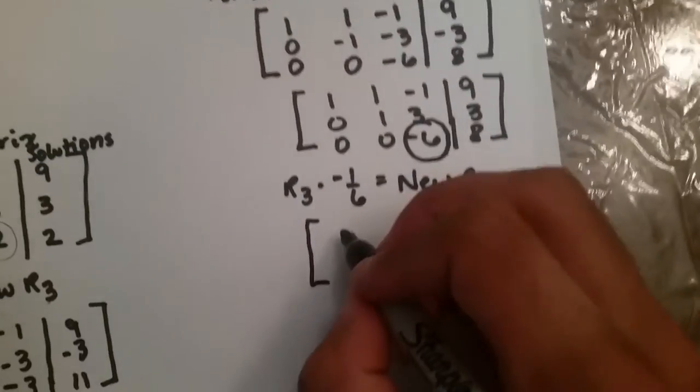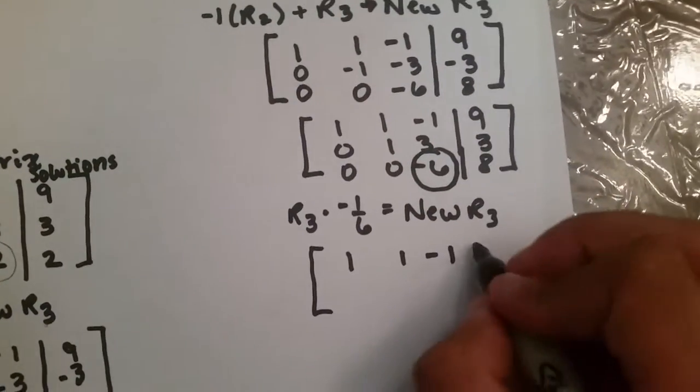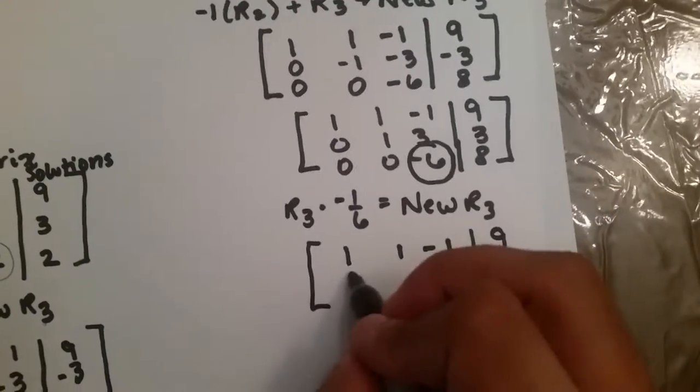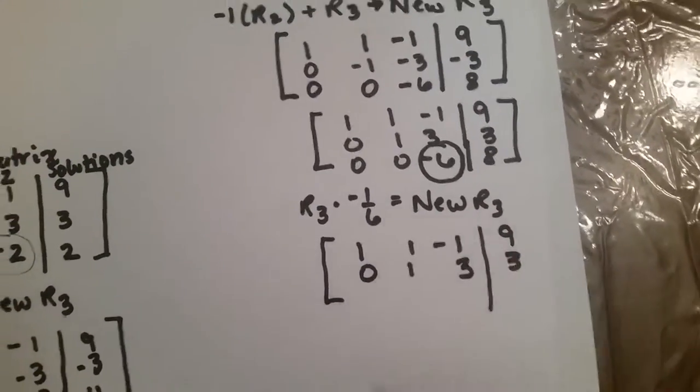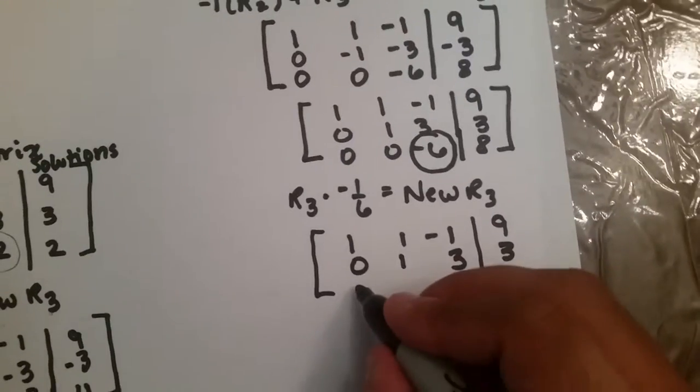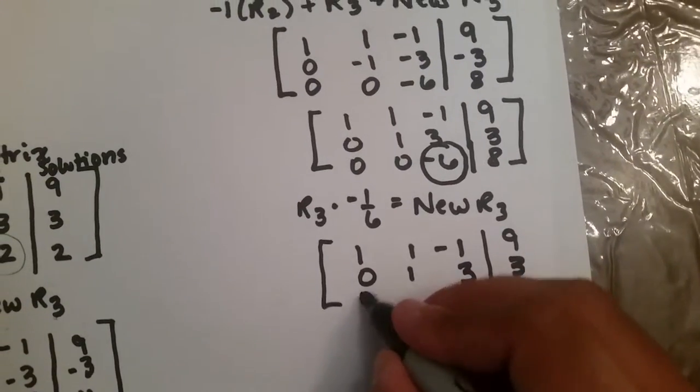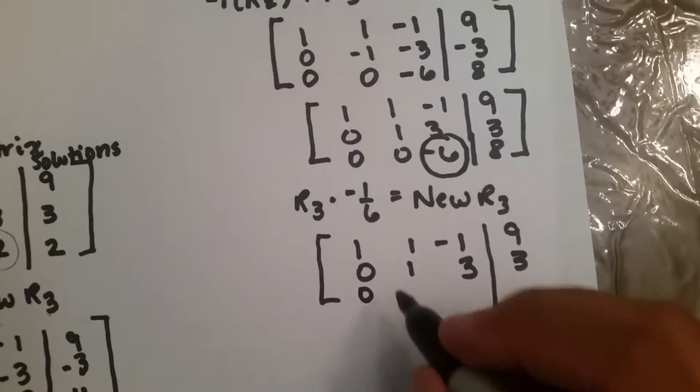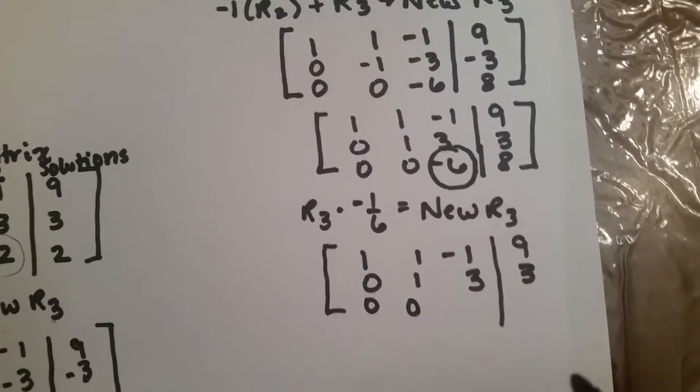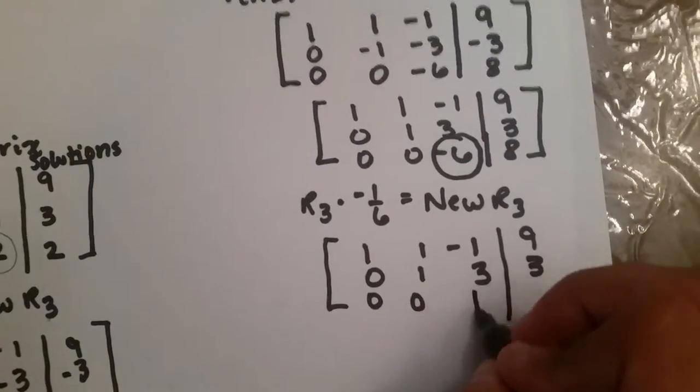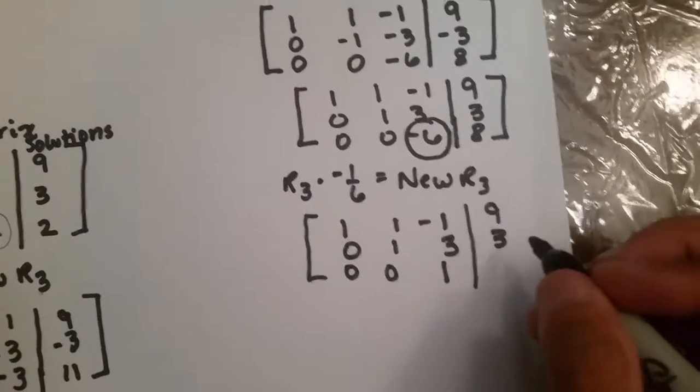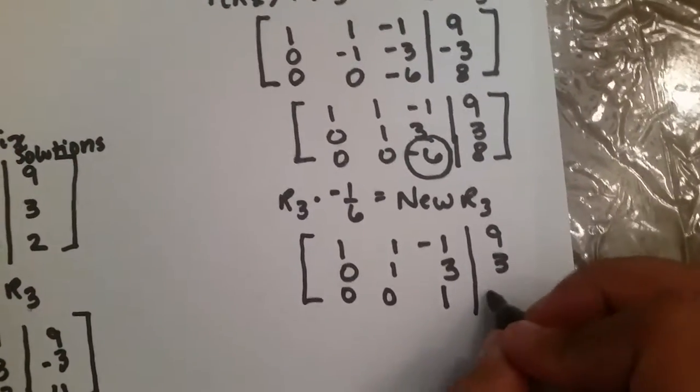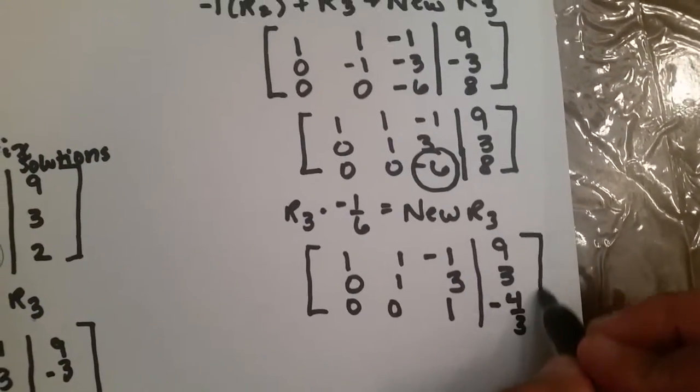So, you know your row 1 will be the exact same. Row 2 will be the same. And row 3 would be 0 times negative 1 sixth, which is 0, 0 times negative 1 sixth, which is 0, and negative 6 times negative 1 sixth, which is 1. And finally, 8 times negative 1 sixth, which is negative 8 over 6, or if you reduce it, it would be negative 4 over 3.